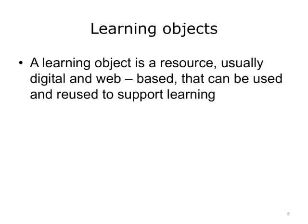A learning object is a resource, usually digital and web-based, that can be used and reused to support learning. Learning objects offer a new view of the learning process. Rather than the traditional hour-long chunk, they provide specific, smaller, self-contained, reusable units of learning. We already learned that adult learners perform best when training is given in shorter 15- to 20-minute blocks, so the learning object approach meets one criterion for good adult learning instructional design.